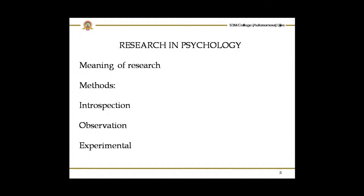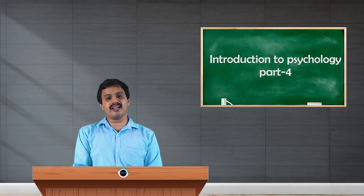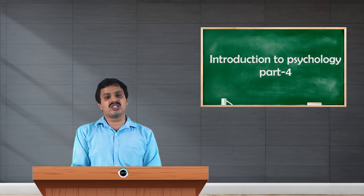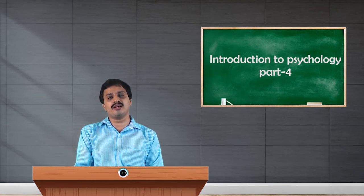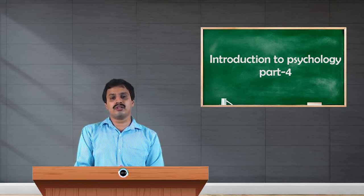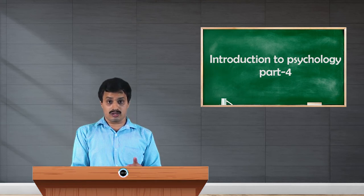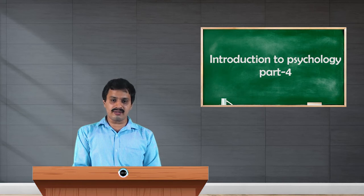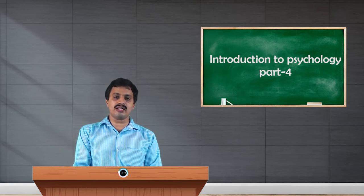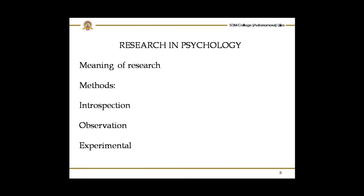For example, smoking cigarette causes cancer — smoking is the independent variable and cancer is the dependent variable. Another psychological example: scolding creates emotional tension in a person. So scolding is the independent variable and emotional tension or outburst is the dependent variable.